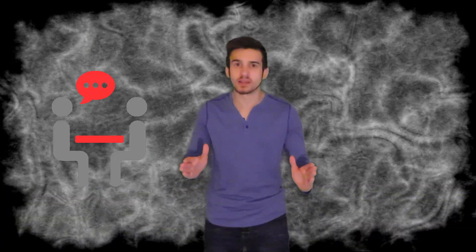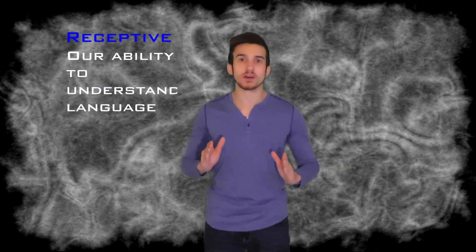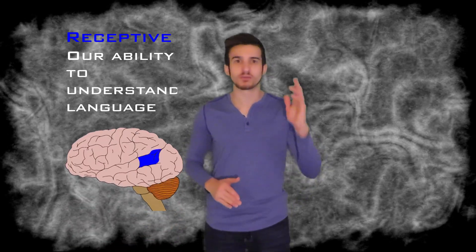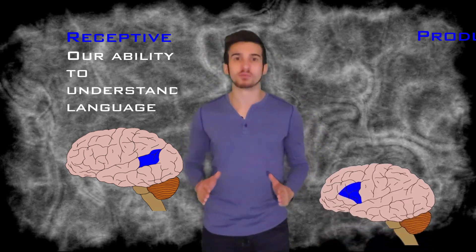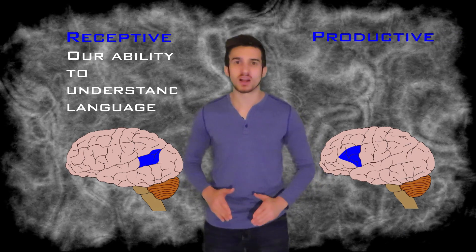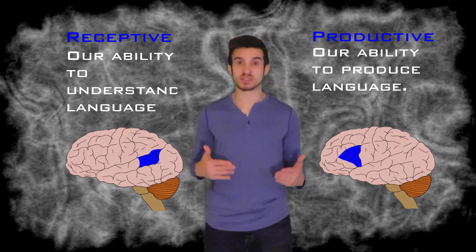And for our last topic, we have language. Language is just going to be the way that we communicate meaning to ourselves and to others. This can be from spoken language, from written language, or even body language. Our receptive language is going to be our ability to understand language. This is the area of the brain known as Wernicke's area. It is going to be located on the left cerebral cortex right above your left ear. Located a little bit closer to your forehead, we have Broca's area, which is going to be responsible for our productive language. Or simply, it's going to be what allows us to speak.